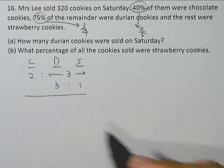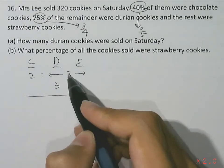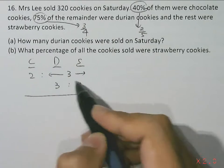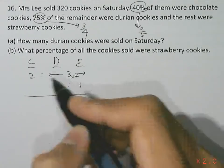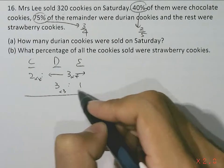So combining these two ratios, the overlapping part is the durian and strawberry. So this is three, this is four, adding up to four. So three and four has to match the twelfth. So the upper ratio has to multiply by four, and the lower ratio has to multiply by three.